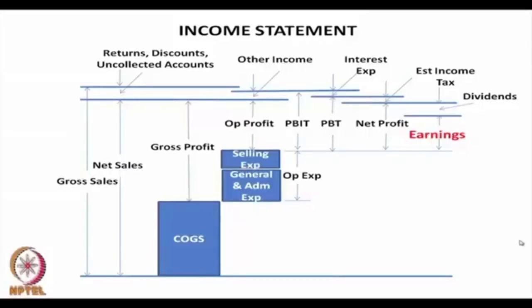Let us see once again the picture we had shown in the last lecture on income statement. This shows how the earnings retained by the company are calculated. First, this is the gross sales line, which is like a datum line. Gross sales minus returns, discounts, or bad debts gives us net sales.